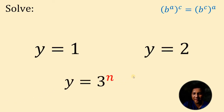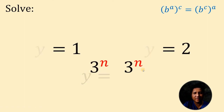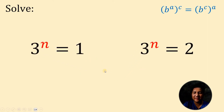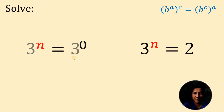Now take note that y must be equal to 3 raised to the power of n. Therefore, we can replace all y with 3 raised to the power of n. Now let's solve for the value of n. This 1 can be written as 3 raised to 0, because any number raised to 0 must be 1, provided that the base is not equal to 0. So we have equal expressions with equal bases. Therefore, the exponents must be the same. So n must be equal to 0. Here's our first answer.